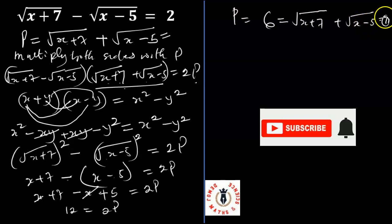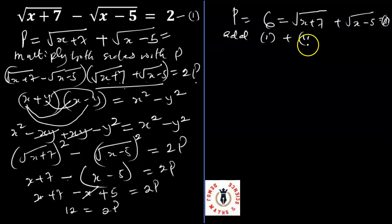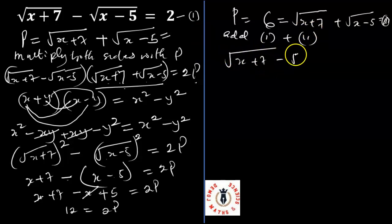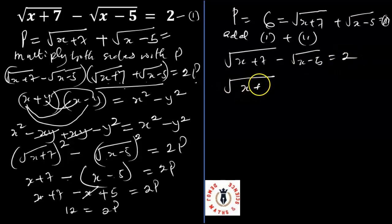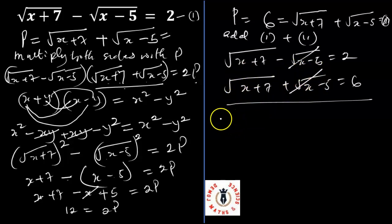Let's call the original equation equation 1, and the equation square root of x plus 7 plus the root of x minus 5 equals 6 as equation 2. If I add equation 1 and equation 2, the negative root of x minus 5 and the positive root of x minus 5 cancel out. I'm left with 2 times the root of x plus 7 equals 2 plus 6, which is 8.